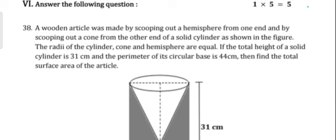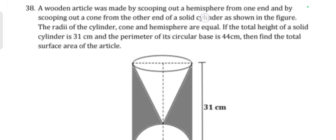Answer the following question, one question, last but not least, five mark question. Question 38: A wooden article was made by scooping out a hemisphere from one end and by scooping out a cone from the other end of a solid cylinder as shown in the figure. The radii of the cylinder, cone, and hemisphere are equal. If the total height of the solid cylinder is 31 centimeters and the perimeter of its circular base is 44 centimeters, then find the total